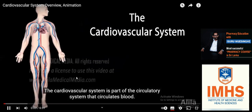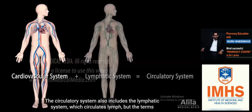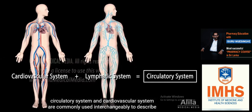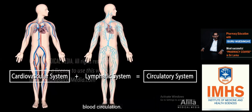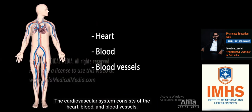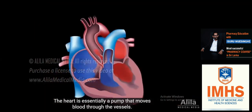The cardiovascular system is part of the circulatory system that circulates blood. The circulatory system also includes the lymphatic system, which circulates lymph, but the terms circulatory system and cardiovascular system are commonly used interchangeably to describe blood circulation. The cardiovascular system consists of the heart, blood, and blood vessels. The heart is essentially a pump that moves blood through the vessels.